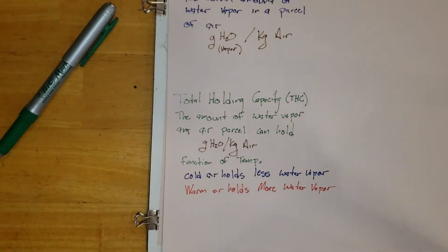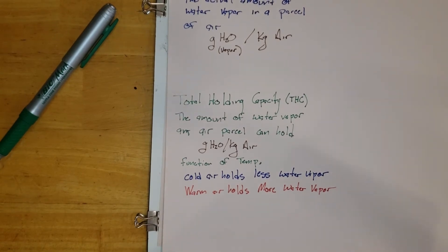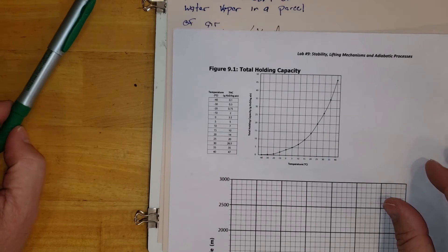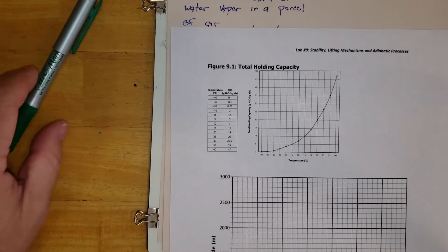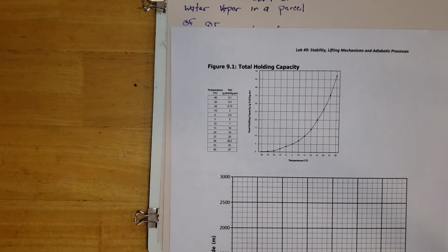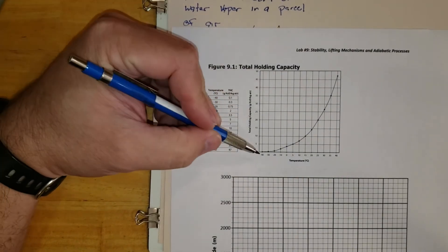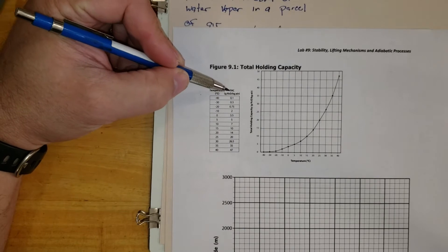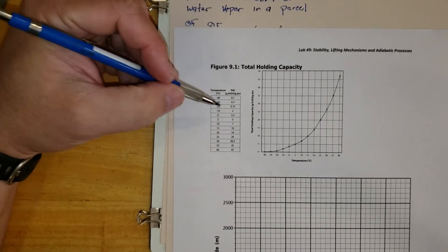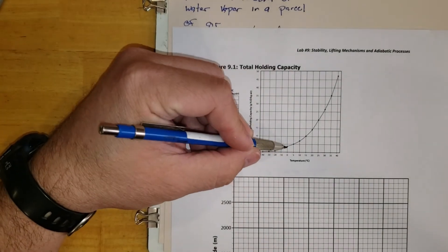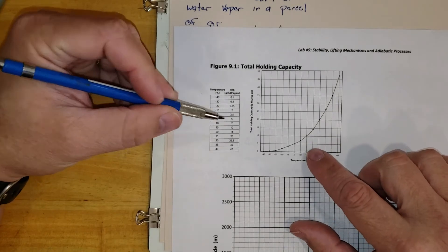So I want to pull out a little graph that shows our total holding capacity, and if you're in my lab class, it's in lab number nine. We're going to take a look at it here. This graph is showing our total holding capacity. What we have is our tabular data and we have it all plotted out. You'll notice that over here, we're going to have our temperature. If our temperature is super cold at negative 40, then it's going to be hardly anything—0.1 is my total holding capacity, my grams of water per kilogram of air.